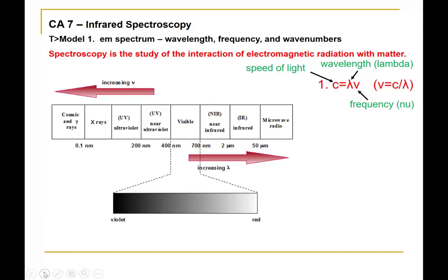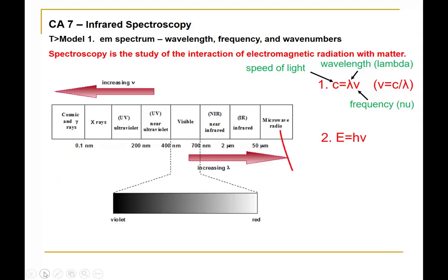Rearranging the equation to solve for nu gives us nu equals c over lambda. The energy of a photon is directly proportional to frequency, shown by the equation E equals h times nu, where h is Planck's constant. As frequency increases, the energy of light increases — high-frequency light like cosmic rays, gamma rays, and x-rays are high energy, while microwaves and radio waves have low frequencies and low energy.